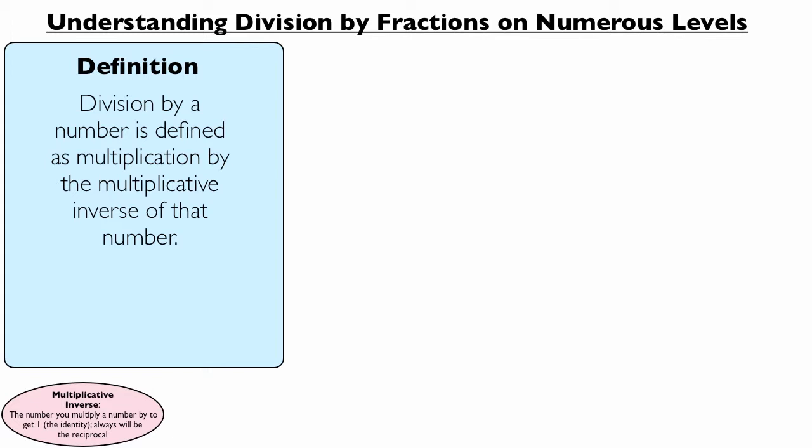And it'll always be the reciprocal of that number. For instance, 3 times a third is equal to 1, 2 thirds times 3 over 2 is equal to 1. And so division by a number is defined as multiplication by the inverse of that number. That's how we're defining it. That's the definition.